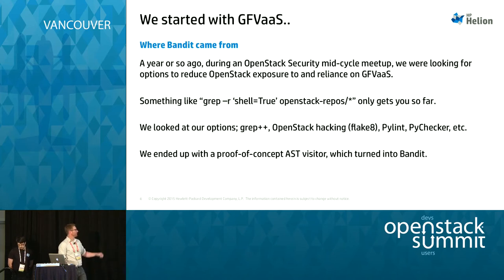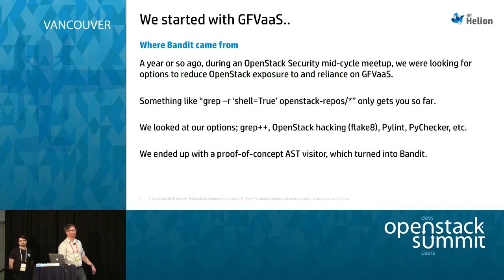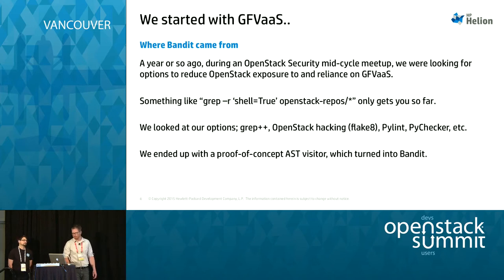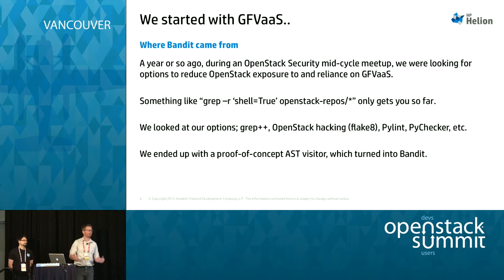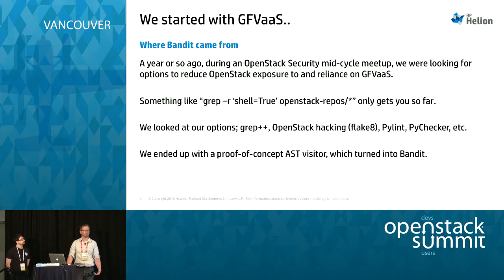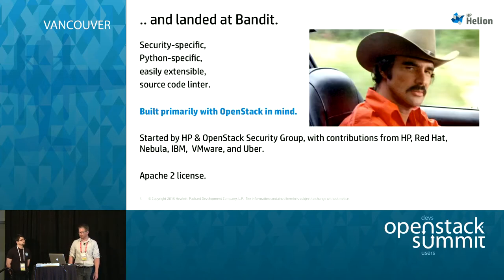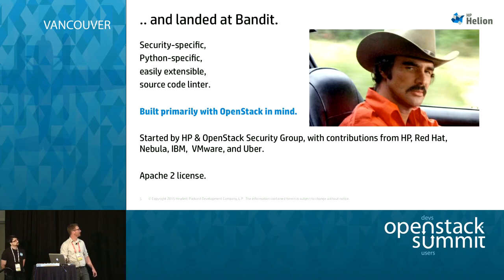Grep worked to a point, but grep only gets you so far with Python — things like whitespace, or the fact that true could also be one or various other values. We wanted other options, so we looked at improving our usage of grep, using OpenStack hacking, the Flake8 toolset, extending PyLint, using PyChecker, but those were more focused on general Python code-based hygiene as opposed to being security-specific. By the end of that week, we ended up with a proof-of-concept — an AST visitor that takes Python source code, turns it into an abstract syntax tree, parses it, processes it, analyzes it, executes tests against it, and presents possible security issues.